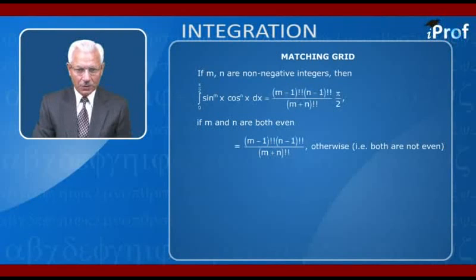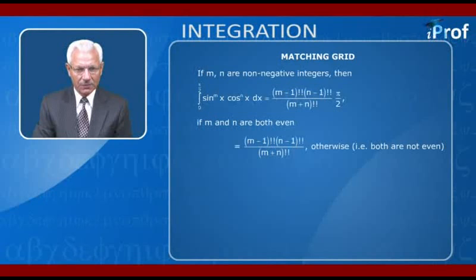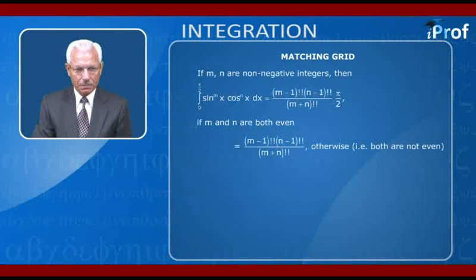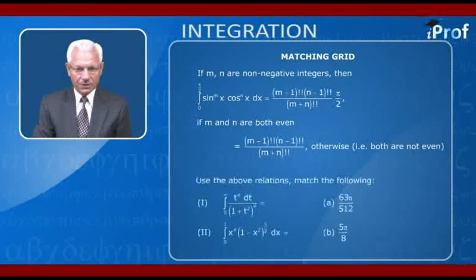Now, (m−1)!! means the product of all terms less than or equal to m−1 which differ by 2. That means (m−1)!! = (m−1)(m−3)(m−5)···, continuing until the last term becomes either 2 or 1. Now, use the above relations to match the following results.